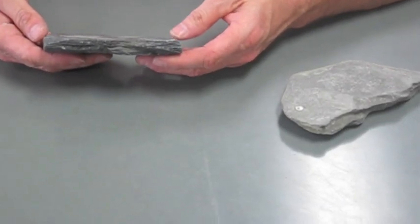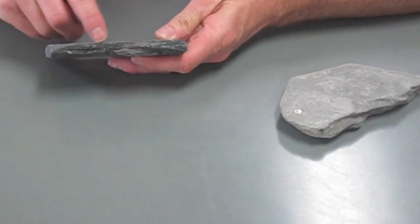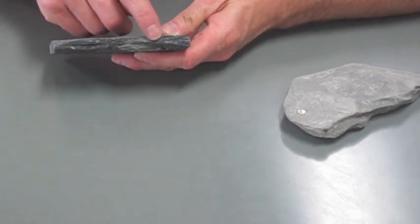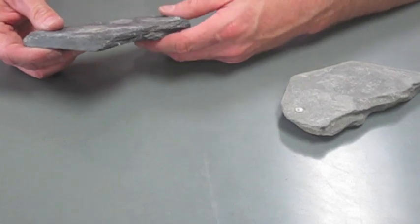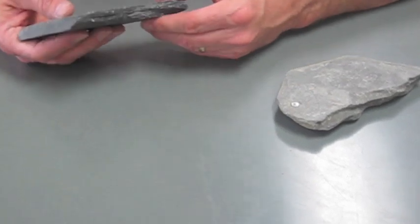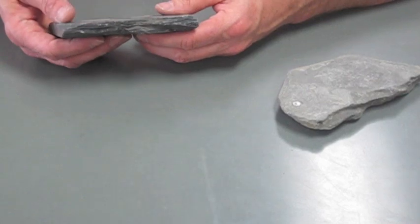This is a metamorphic rock called slate. If you look carefully along the edges, you can see that there's layering in the rock. It's been compressed in a systematic way under a directed pressure. That makes that feature which is called foliation.